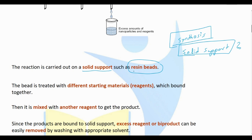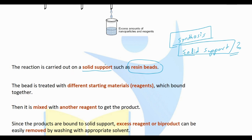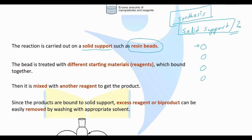What is the use and importance of this solid support? We will be able to prepare a large number of compounds in the synthesis. We are going to use a solid support, which consists of resin beads, and the resin bead is used with a linker molecule.